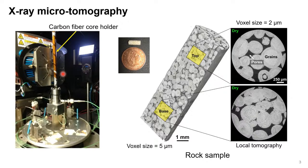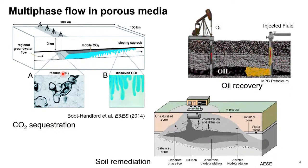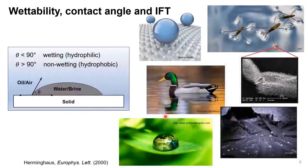We use this type of core holder for multi-phase flow experiments, which have many different applications and significance — for example CO₂ storage, oil recovery, and understanding contaminant transport from fuel spills. Multi-phase flow can be impacted by many different parameters, and one of the most important is the wettability of the system. You can find the concept of wettability in natural settings and many industrial settings — for example, if you want to make your clothes rainproof, you want to make it hydrophobic so water doesn't go into the fabric.